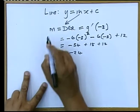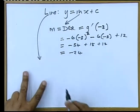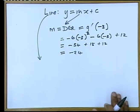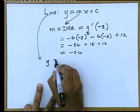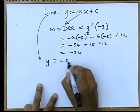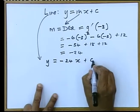Remember this straight line of which I'm finding the equation, because I'm asked to find the equation of the tangent, is Y equals MX, so the M is minus 24X plus C.